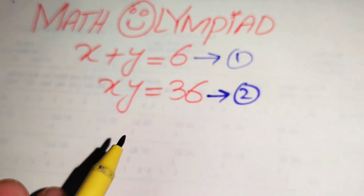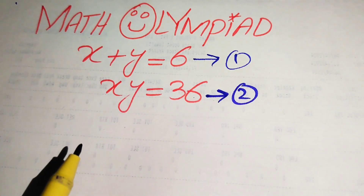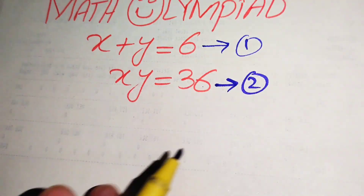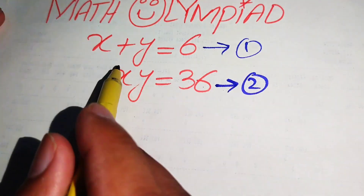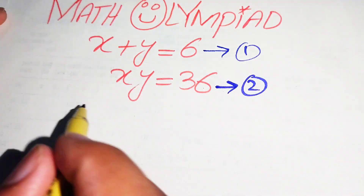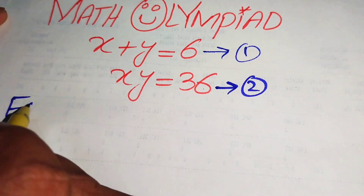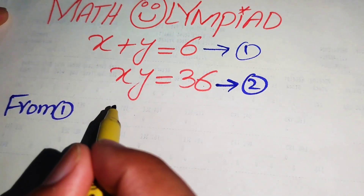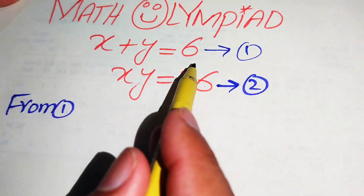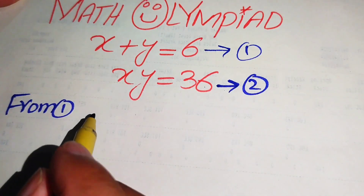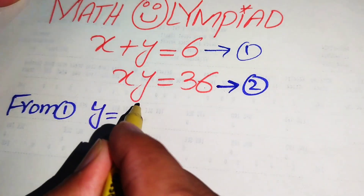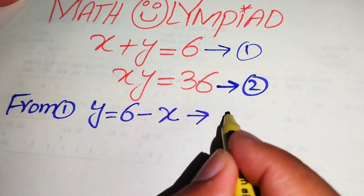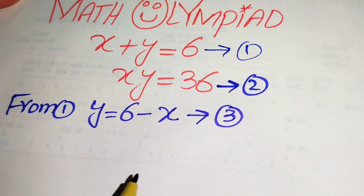First, we focus on equation number 1 and eliminate the value of x. From equation number 1, we move x to the right hand side and we get y equals to 6 minus x, and we call this equation number 3.